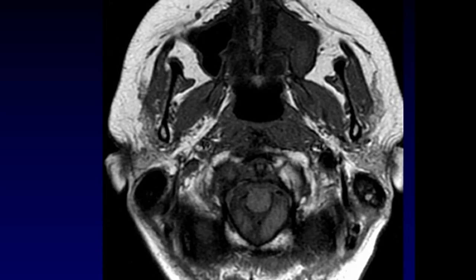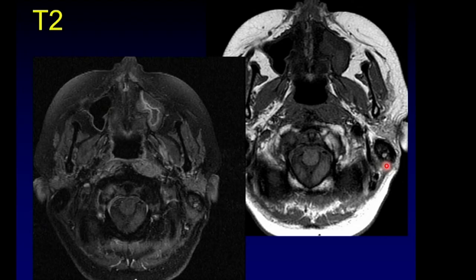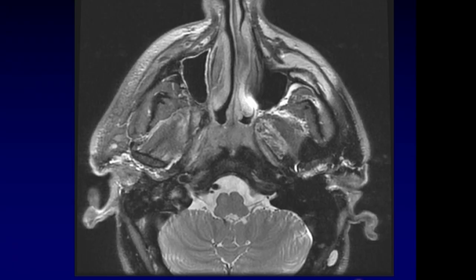A case that looks confined on unenhanced scan may show T2-weighted edema throughout the prevertebral musculature, indicating erosion — this defines extension to the prevertebral musculature as T2 disease. In another example, the prevertebral musculature appears well-confined on one side but is violated on the other; that asymmetry is the clue to invasion. If the internal carotid artery is completely surrounded by infiltrative tumor extending laterally and posteriorly, this represents T2 disease due to involvement of the carotid space.